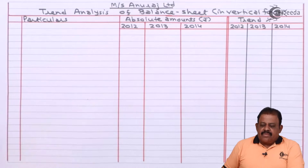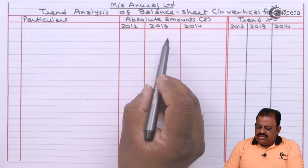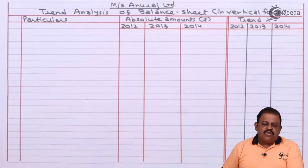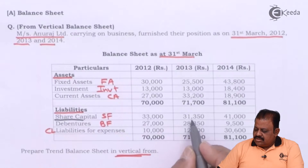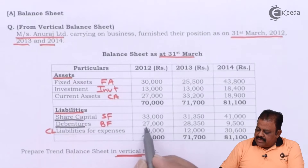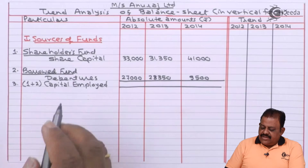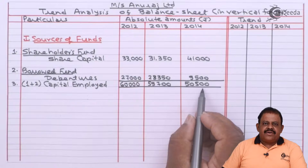For Anuraj Limited, trend analysis of balance sheet in vertical format: we need columns for each year for absolute amounts as well as trend percentages. There are three years, so three columns for trends also. In the first part — sources of funds — share capital is 33,000 for 2012, 31,350 for 2013, and 41,000 for 2014. Debentures are 27,000, 28,350, and 9,500. Capital employed is 60,000, 59,700, and 50,500.